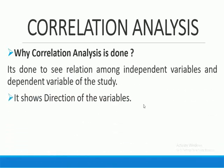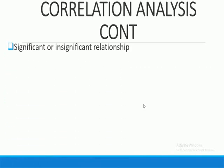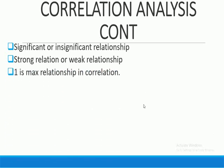Correlation shows the direction of our variables. Number two, it tells us about the significant or insignificant relationship of our variables. It also tells us whether the variable relationship is strong or weak.